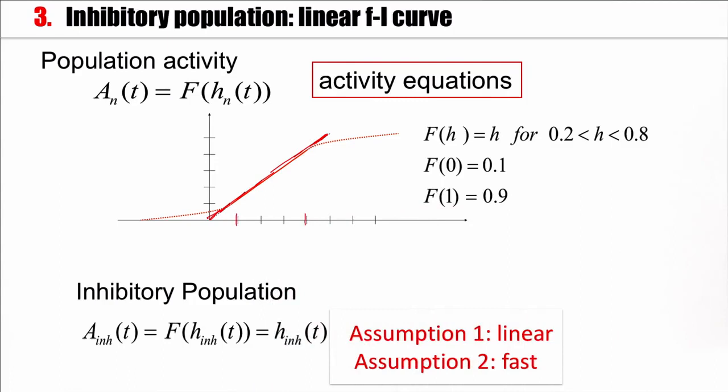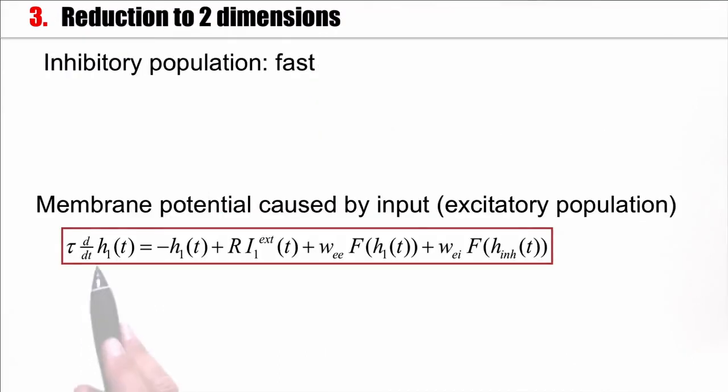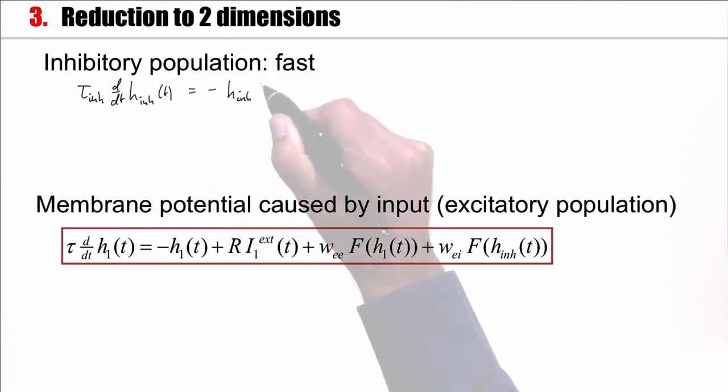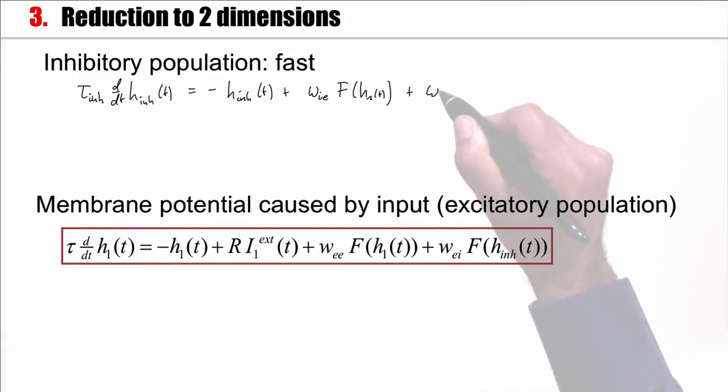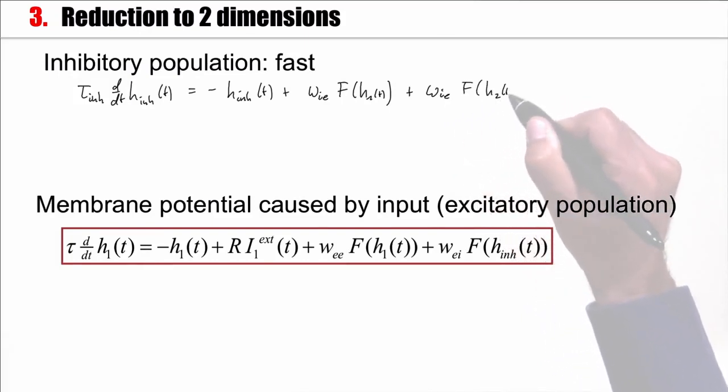The other assumption is that the inhibitory population is in fact fast. For the inhibitory population, we have an equation very similar to this one here. It has a time constant, the decay term, no external stimulus—that's a further assumption. And then I would have the input to the inhibitory population coming from the excitatory population, which would be f of h1 of t, plus the input from the other excitatory population, f of h2 of t.